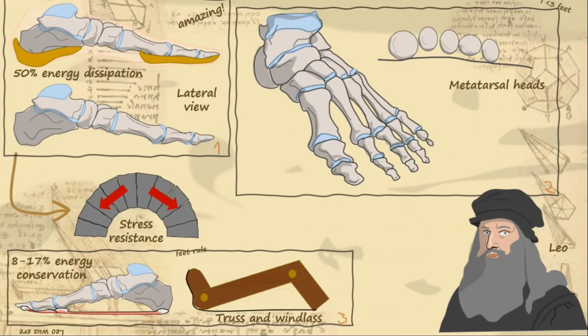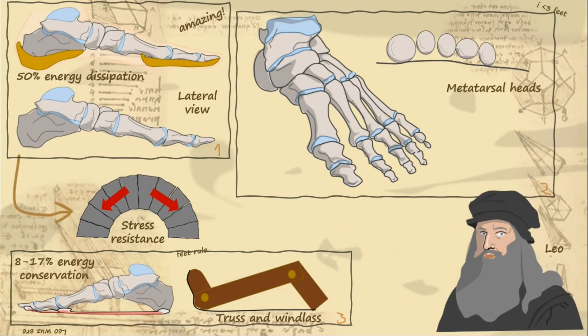The plantar fascia acting in this way is theorized to contribute 8-17% of the mechanical energy required for each step, as well as acting to turn the foot from 26 individual bones into a single unit and back again, rapidly as the gait cycle repeats.